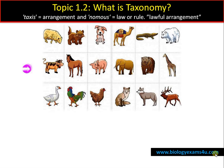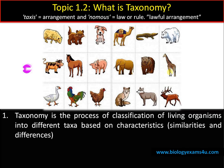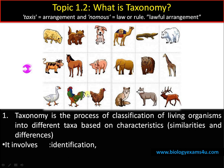'Taxis' means arrangement and 'nomos' means law or rule, so taxonomy is the lawful arrangement or classification of organisms. Just look at this picture — when we see it, our first natural tendency is to identify the animals as sheep, cat, dog, etc. The next thing we do is classify them as wild animals and domestic animals, or as mammals and birds. So we have a natural tendency to classify things. Taxonomy is all about the process of classification of living organisms into different groups based on characteristics.